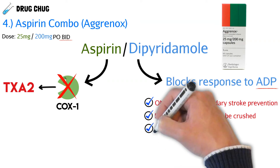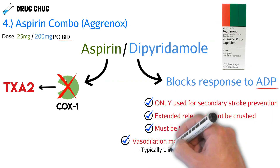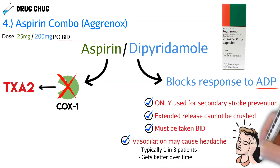Even though it's extended-release, you still take it twice a day. At 25 milligrams of aspirin per dose, twice daily gives 50 milligrams every day — a good dose to stop platelet aggregation. One important counseling point: dipyridamole can cause vasodilation leading to headache, and we see headache in about one in three patients. It's very problematic, but patients should be told it does get better over time.